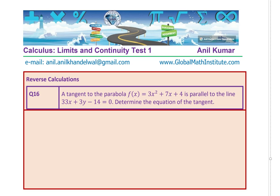Here is the last question: a tangent to the parabola f of x equals 3x squared plus 7x plus 4 is parallel to the line 33x plus 3y minus 14 equals 0. Determine the equation of the tangent. You might have to do reverse calculations — first find the point on the parabola where the slope is parallel to the given line, and then find the equation.